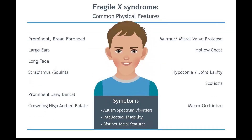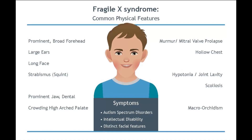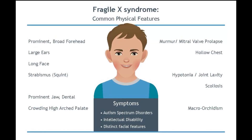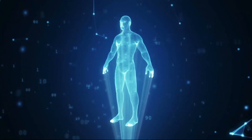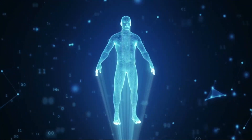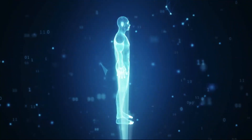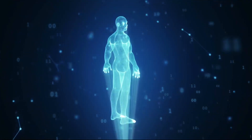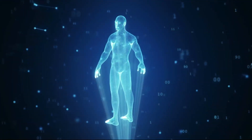Fragile X syndrome is a genetic mutation on the X chromosome in males. Symptoms include an elongated face, large or protruding ears, flat feet, larger-than-average testes, and low muscle tone. Fragile X syndrome affects the sexes differently. Females have two X chromosomes, so the effects of the mutated X chromosome are masked partially by the presence of the unaffected X chromosome, making symptoms less severe. Since males only have one X chromosome, the symptoms of Fragile X syndrome are much more severe.